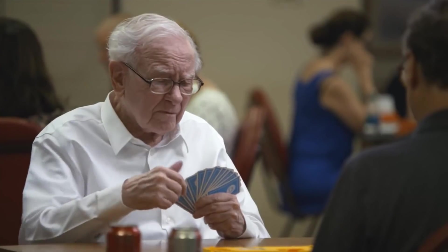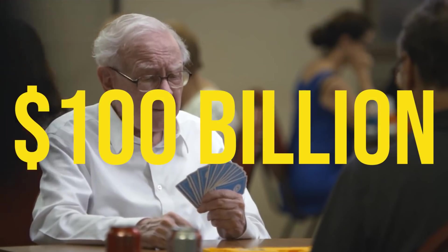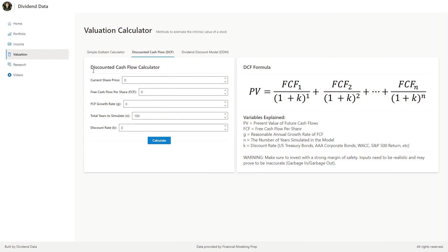Warren Buffett is considered one of the greatest investors of all time, amassing a net worth of over $100 billion. Today, I'm going to explain how Buffett uses discounted cash flow to calculate the intrinsic value of a stock.